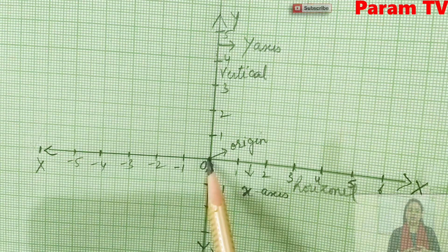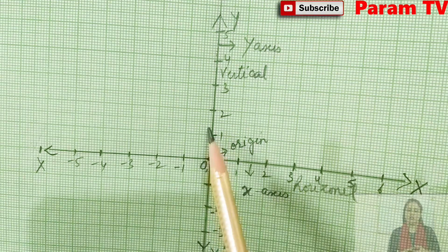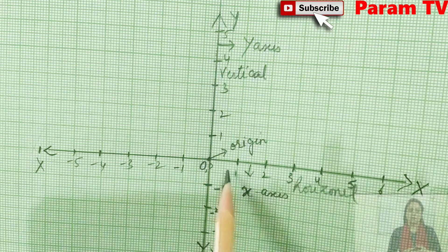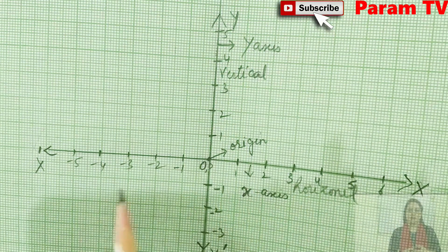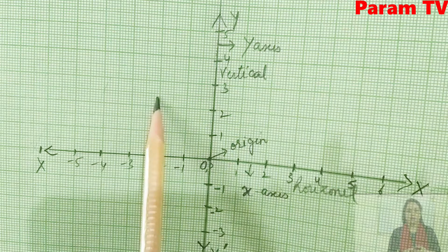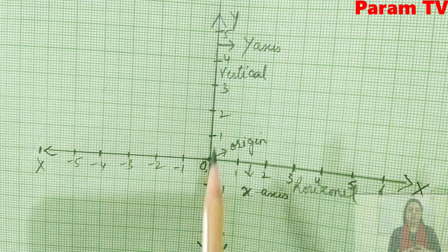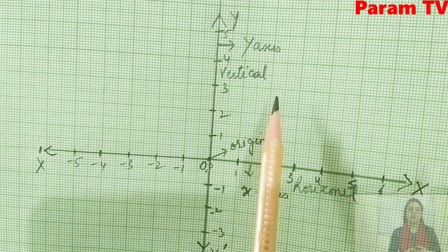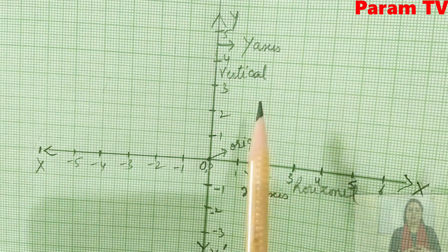The origin is 0. Then 1, 2, 3, 4 on y-axis and x-axis. This is the Cartesian plane. When these lines cut each other, they form 4 boxes.